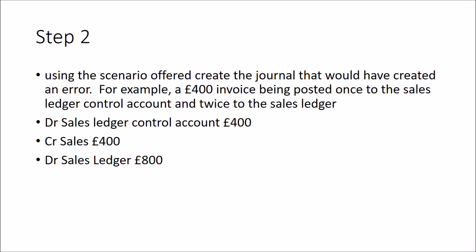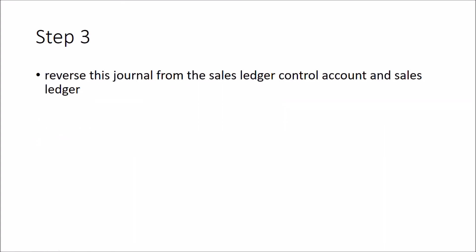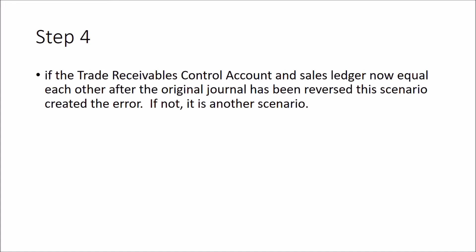Step two: using the scenario, create the journal that would have created the error. For example, a £400 invoice posted once to the sales ledger control account and twice to the sales ledger - the journal would be: debit sales ledger control account, credit sales, then debit sales ledger twice. Step three: reverse that journal from the sales ledger control account and sales ledger. Step four: check whether the control account and sales ledger now equal each other. If they do, that scenario caused the error; if not, it's a different scenario.